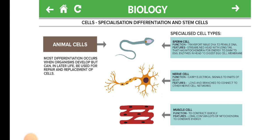Nerve Cell. Function: carry electrical signals to parts of the body. Features: long and branched to connect to other nerve cell networks. Muscle Cell. Function: to contract quickly. Features: long, contains lots of mitochondria to generate energy.